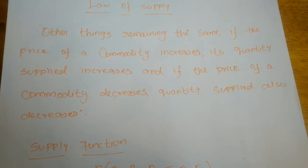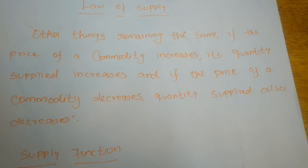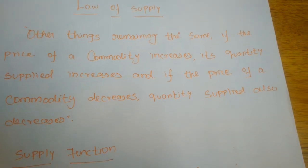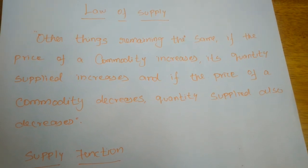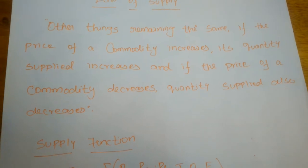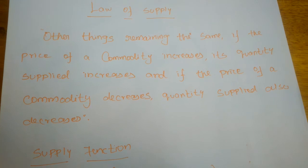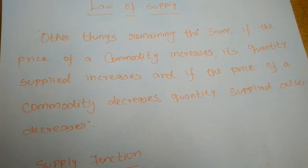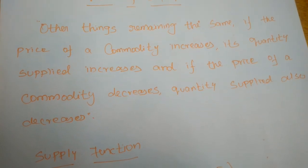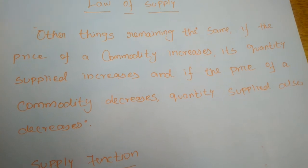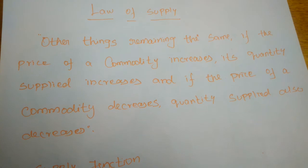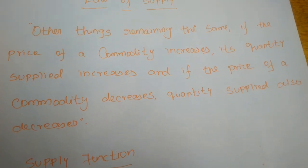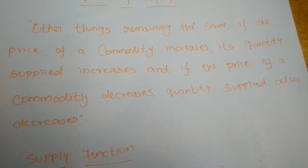Other things remaining the same: if the price of a commodity increases, its quantity supplied increases; and if the price of a commodity decreases, quantity supplied also decreases. 'Other things remaining the same' means other factors affecting supply — such as income, taste and preference, short-term and long-term scenarios — are held constant. Only when the price of a commodity changes does its quantity supplied change accordingly.